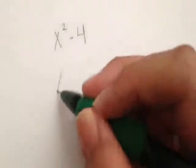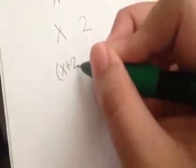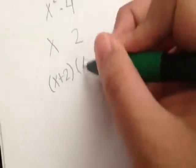Oh! I get it now! First, I have to find the square root of both of these. So the square root of x squared would be x, and the square root of 4 would be 2. Now let me put it in factor form. So, x plus 2 and x minus 2.